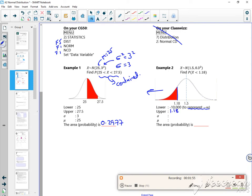Sigma is 0.3 because sigma squared is 0.3 squared, so sigma is 0.3, and mu is 1.5.